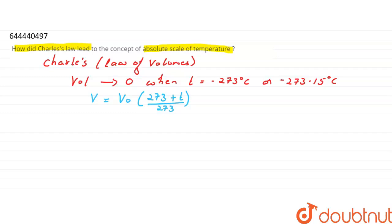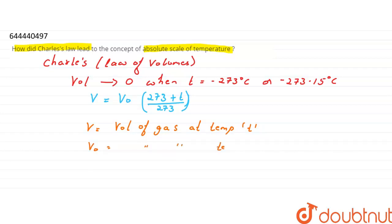Here, V is the volume of the gas at temperature t, and V-naught is the volume of the gas at 0 degrees Celsius.